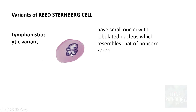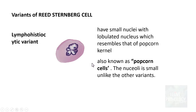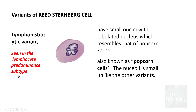The last variant is the lymphohistiocytic variant, also known as the L&H variant. It has small but lobulated nuclei that resemble the kernel of popcorn — which is why these are referred to as popcorn cells. The nucleoli are small, unlike the prominent eosinophilic inclusion-like nucleoli seen in the earlier variants. This type of Reed-Sternberg cell is seen in the lymphocyte predominant subtype.